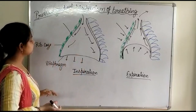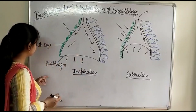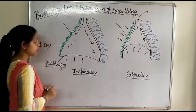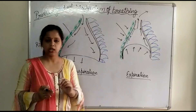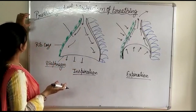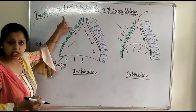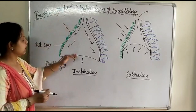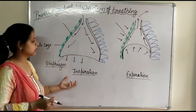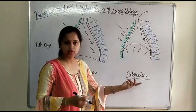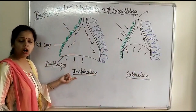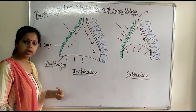This pressure gradient is maintained by certain muscles, like the muscles of the diaphragm and the muscles of the ribs. These muscles help to develop the pressure gradient, which is why air enters the lungs and, after gases are exchanged, air is released out. First, we will study how air is taken in — that is, inspiration.